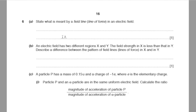Question number 6, part A: state what is meant by a field line in an electric field. A field line shows the direction in which a positive charge would move.